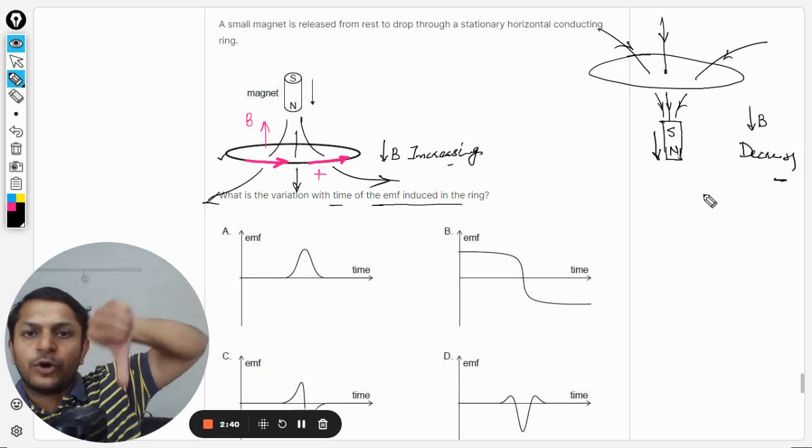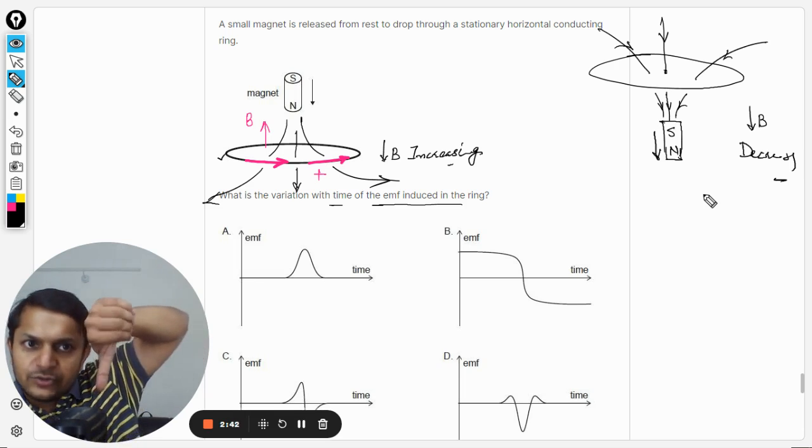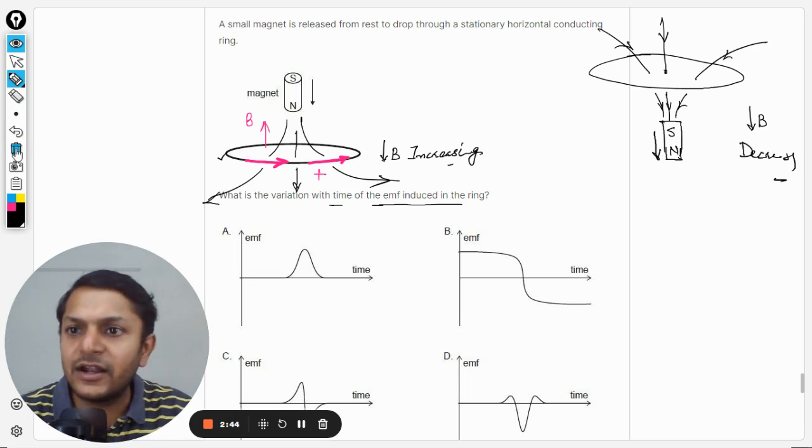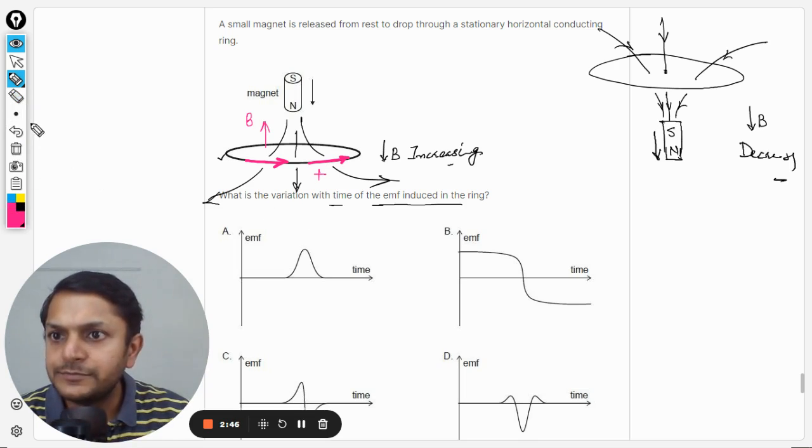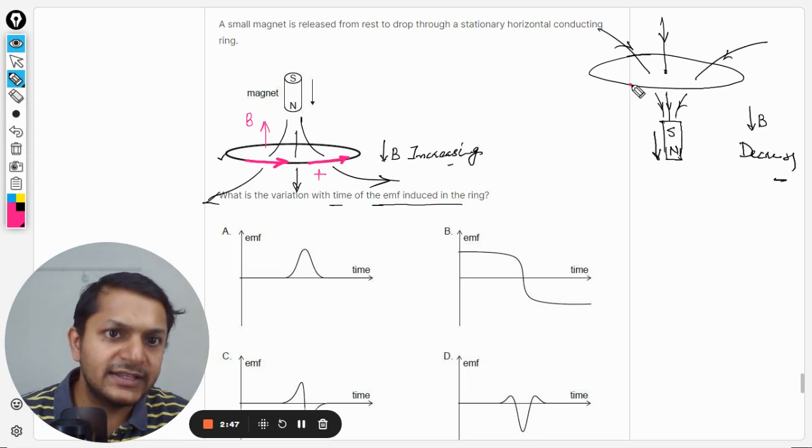And the thumb is pointing towards downwards, so it is going like this. So it means that current will now move in this direction.